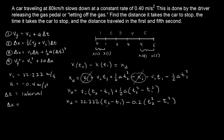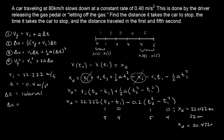For the first interval, plugging in t2 equals 1 and t1 equals 0, we get x sub d equal to 22.022 meters — about 22 meters with significant digits. For the fifth second, t2 equals 5 and t1 equals 4, giving x sub d equal to 20.422 meters — about 20 meters with significant digits.